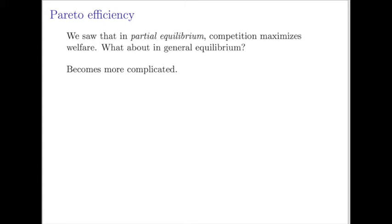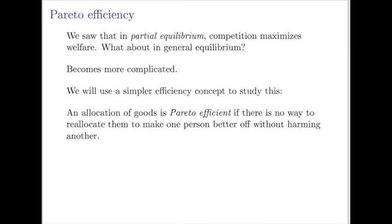This is a little bit more complicated to make a statement to this effect. What we're going to do is use a simpler notion of efficiency. We're going to say that an allocation of goods is Pareto efficient if there's no way to reallocate these goods in a way that makes at least one person better off without making anyone worse off. Or, equivalently in this context, an allocation is efficient if there's no way to reallocate the goods in a way that makes everybody better off.